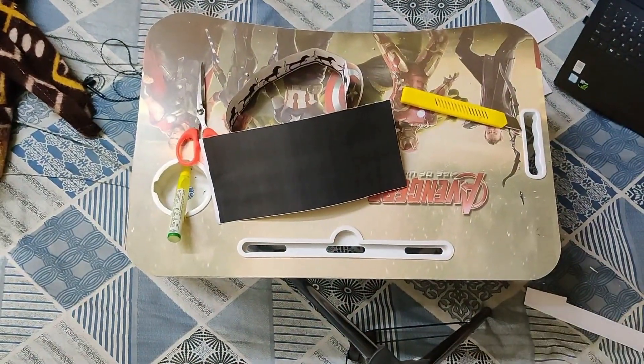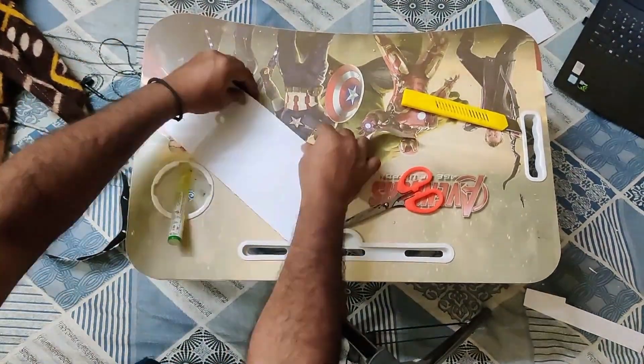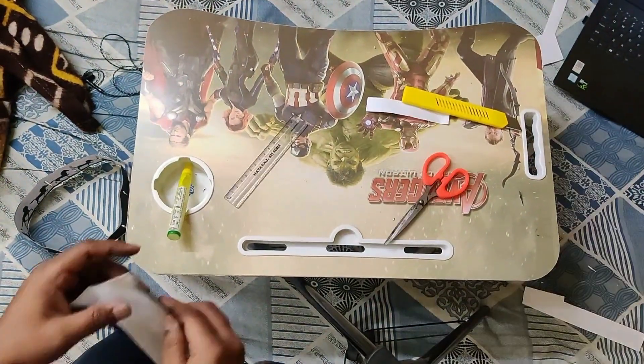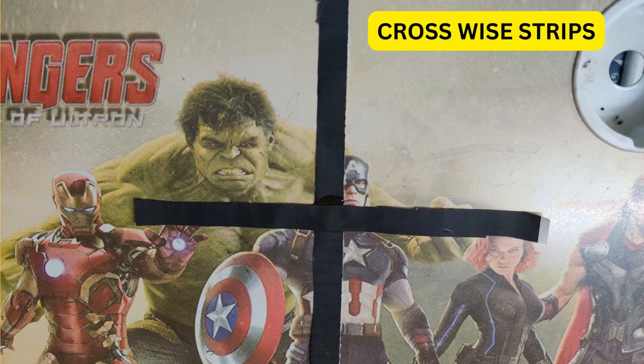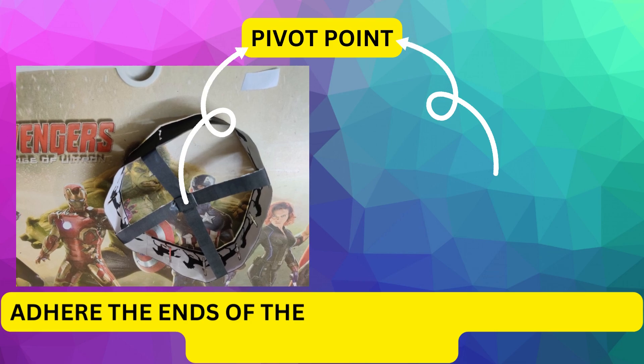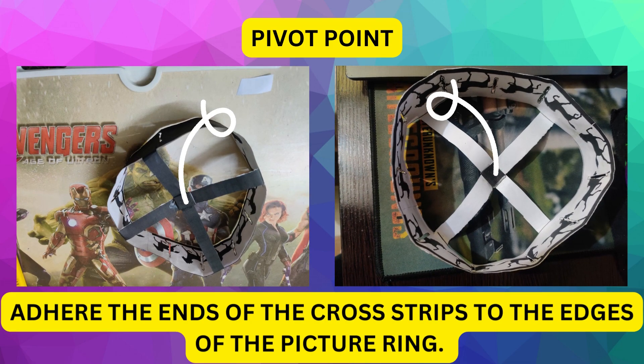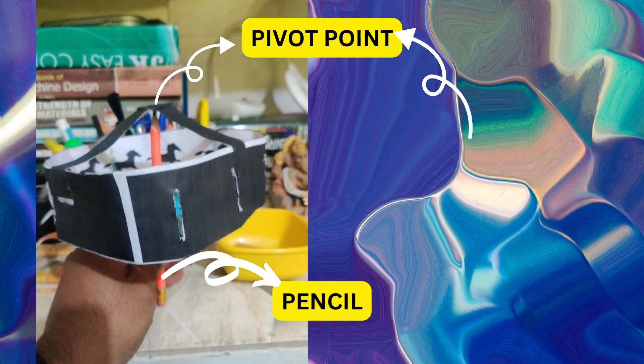Now cut two lengths of strips of black paper and place them crosswise. At the intersection of two strips, establish a pivot point. After this, adhere the ends of the cross strips to the edges of the picture ring. Make sure the pivot point is located at the center of the circle.